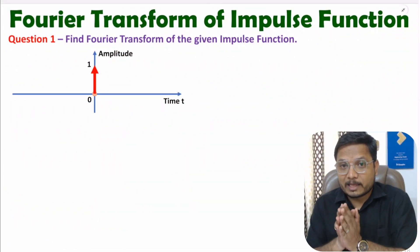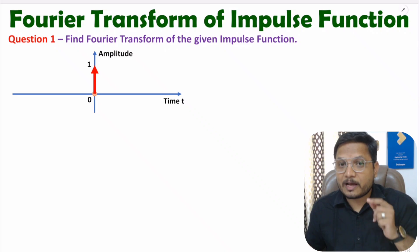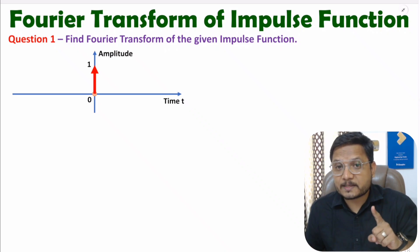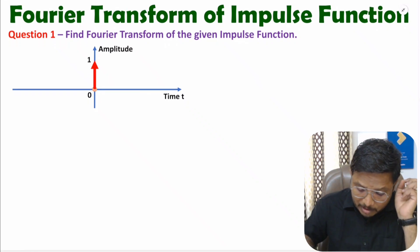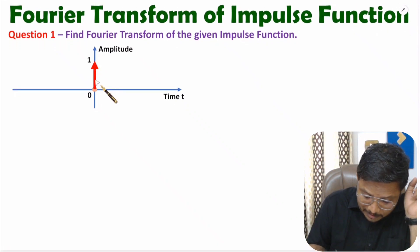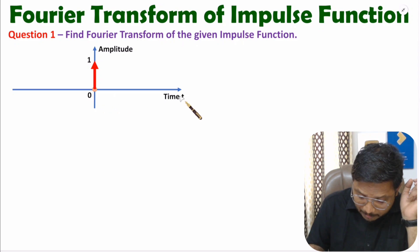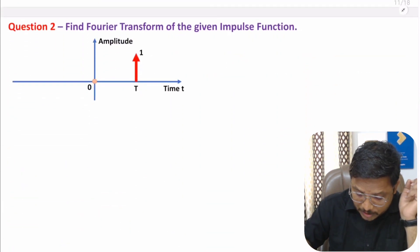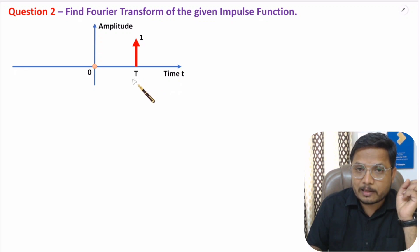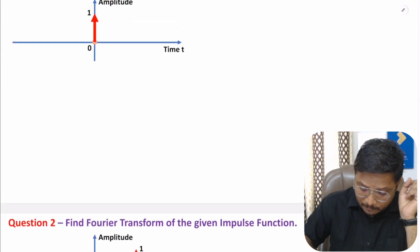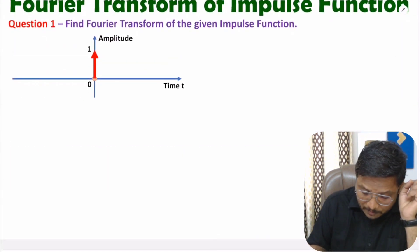Hello friends, welcome to Engineering Funda Family. In this video I will explain the Fourier transform of an impulse signal. I will solve two questions in total. In question number one, the impulse is given at time t equals zero, and in the second question the impulse is given at time t equals capital T.